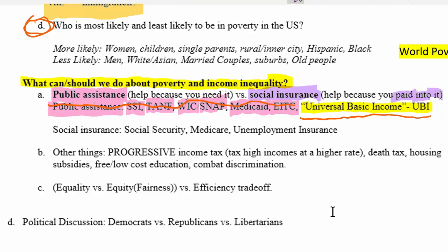The most common social insurance programs in the United States are Social Security retirement — you must pay in for a certain number of years to receive benefits — Medicare, health care for older people that you pay into, and unemployment insurance. When you lose your job through a layoff, you only receive unemployment benefits if you worked long enough to qualify.